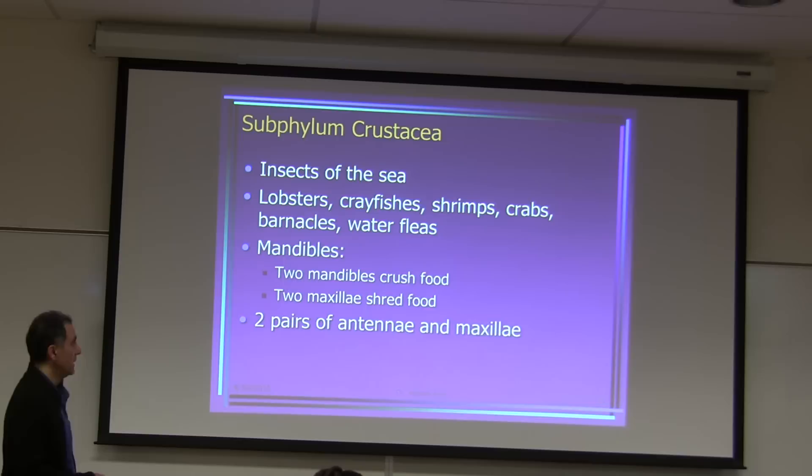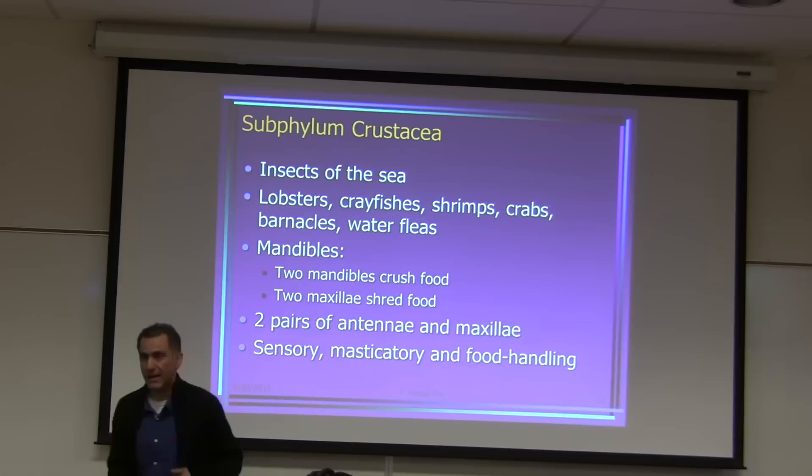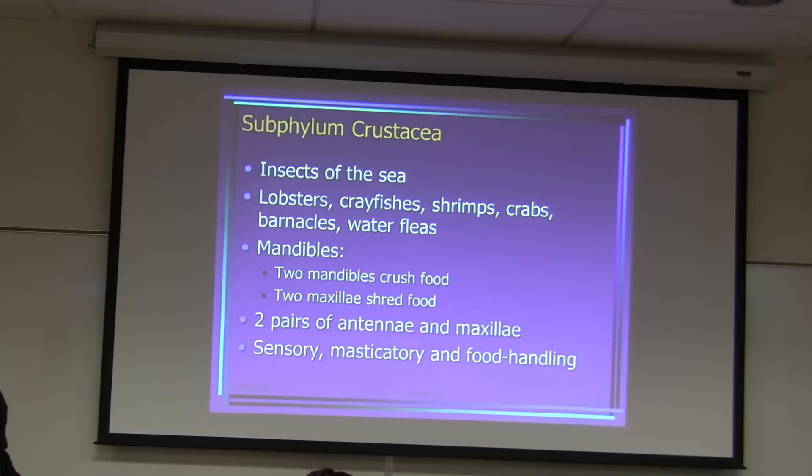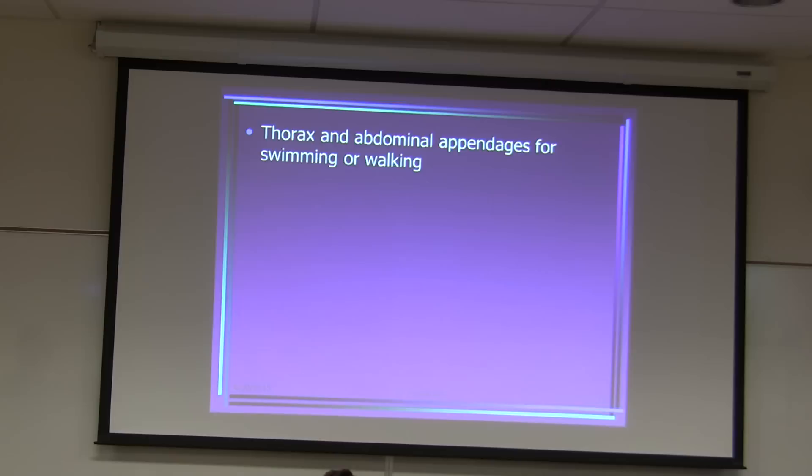These animals have antennae. Antennae are used for sensory functions, and maxillae are used for masticatory and food handling. Masticatory means crushing food, just like your stomach. Some of them have a cephalothorax — the head and thorax are combined together.